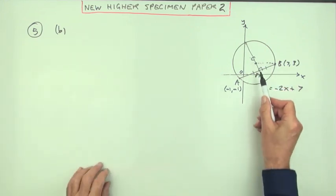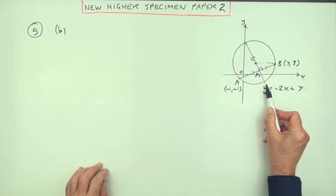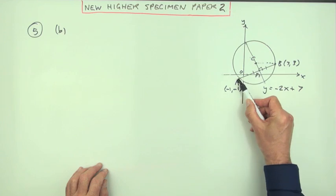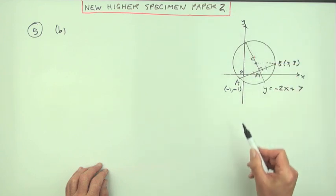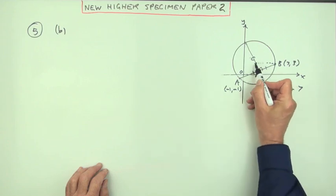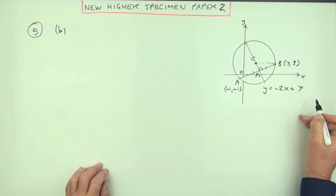Well, that was the whole business about the perpendicular bisector. The perpendicular bisector of a chord must pass through the center. So the first thing you know is the center of the circle lies on this line with equation y = -2x + 7.